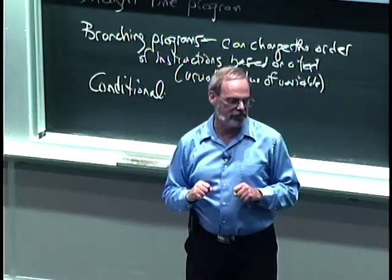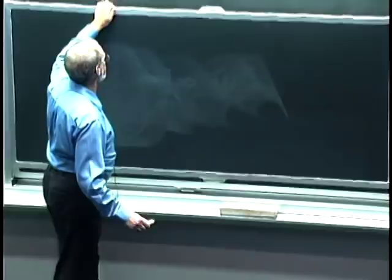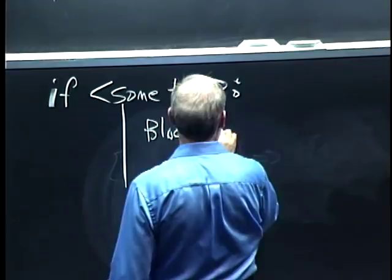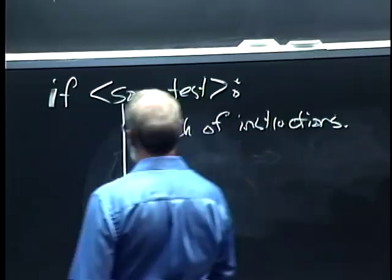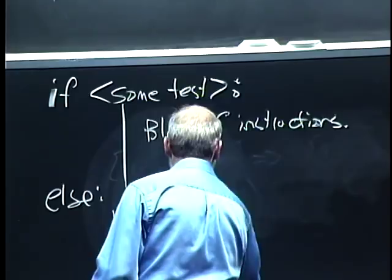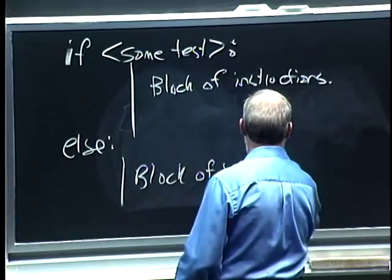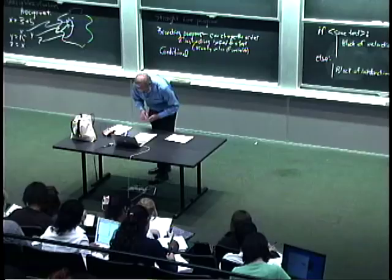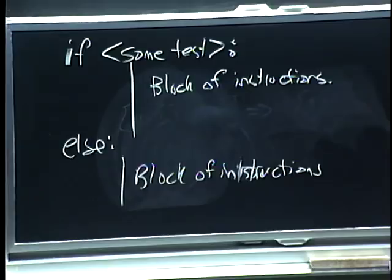The general format is: 'if' followed by some test, followed by a colon, followed by a block of instructions, then 'else' followed by a colon and some other block of instructions. Get used to this — the colon identifies the start, and then the set of indented things identifies all the things at the same level. When we reset back to the previous indentation level, that's when we go back to where we were.